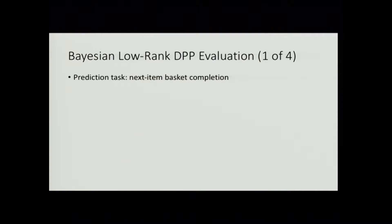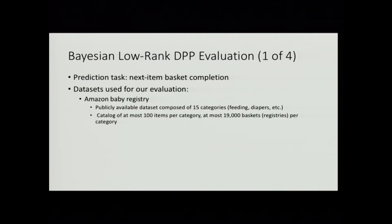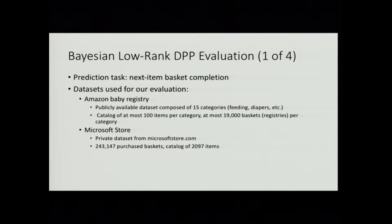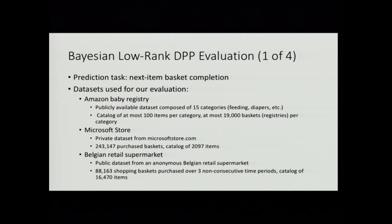Now we've defined our Bayesian low-rank DPP model and have a way to efficiently perform learning. Let's look at how we perform on real-world data sets. Our prediction task is next-item basket completion: given a shopping basket composed of items A, B, and C, we'd like to predict a good item D to add during checkout. We used a few different data sets: the Amazon baby registry dataset used in previous DPP papers (a relatively small-scale dataset of about 15 disjoint item categories), a dataset from MicrosoftStore.com with about 243,000 baskets and 2,097 items, and the Belgian retail supermarket dataset with about 88,000 shopping baskets and a larger item catalog of about 16,000 items.